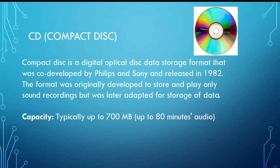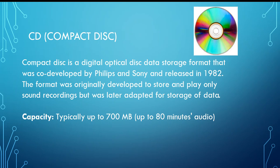Now let us see another type of secondary storage device: the CD. The letters CD represent compact disk. A compact disk is a digital optical disk data storage format that was co-developed by Philips and Sony and released in 1982. It was originally developed to store and play only sound recordings but was later adapted for data storage. It can store up to 700 megabytes of data, and in one CD we can store an audio file with a length of 80 minutes.